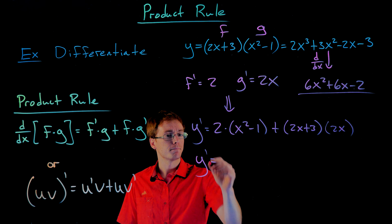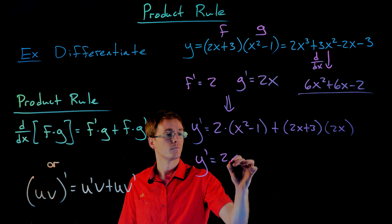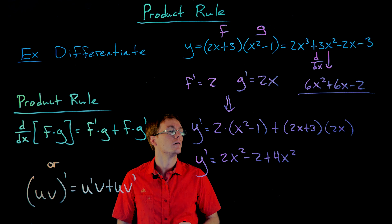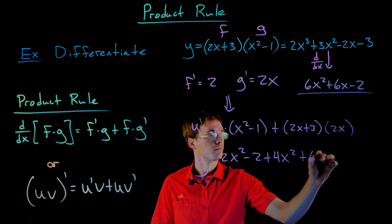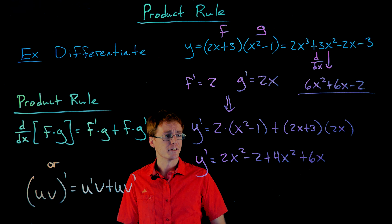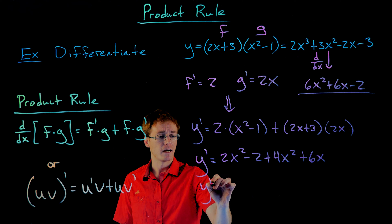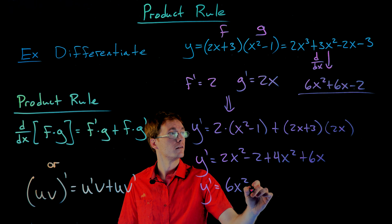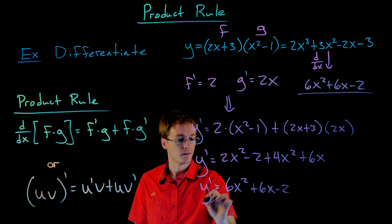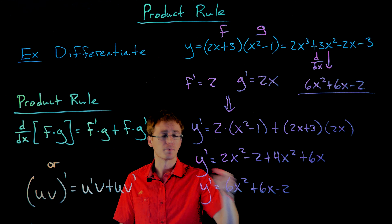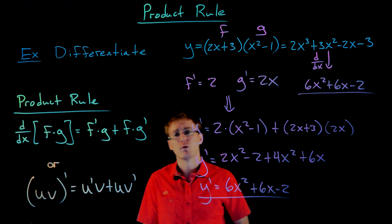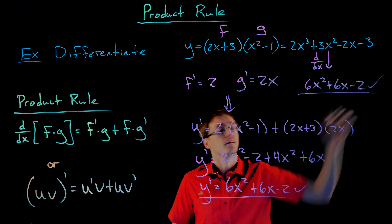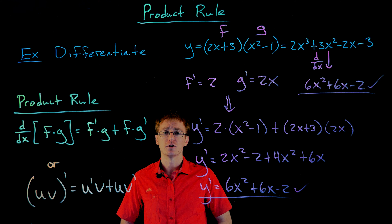Expanding everything using the distributive property and combining like terms, we end up with 6x squared plus 6x minus 2. That's exactly what we got when we used the alternative method. So this confirms the correct derivative of this function using the product rule.